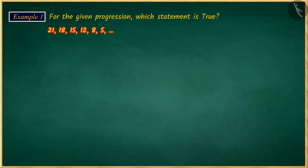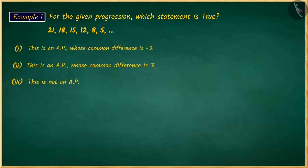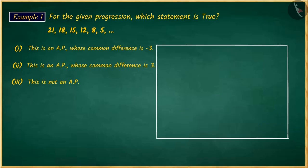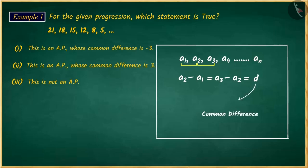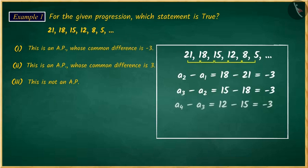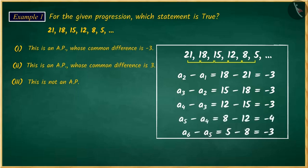Which statement is true for the given series? Pause the video to solve the question and then match your answer. The difference between any two consecutive terms of an arithmetic progression is called the common difference. Let's find the common difference of this series. The difference between any two consecutive terms is not the same in all cases, because of which this will not be an AP. Hence, option 3 is the correct answer.